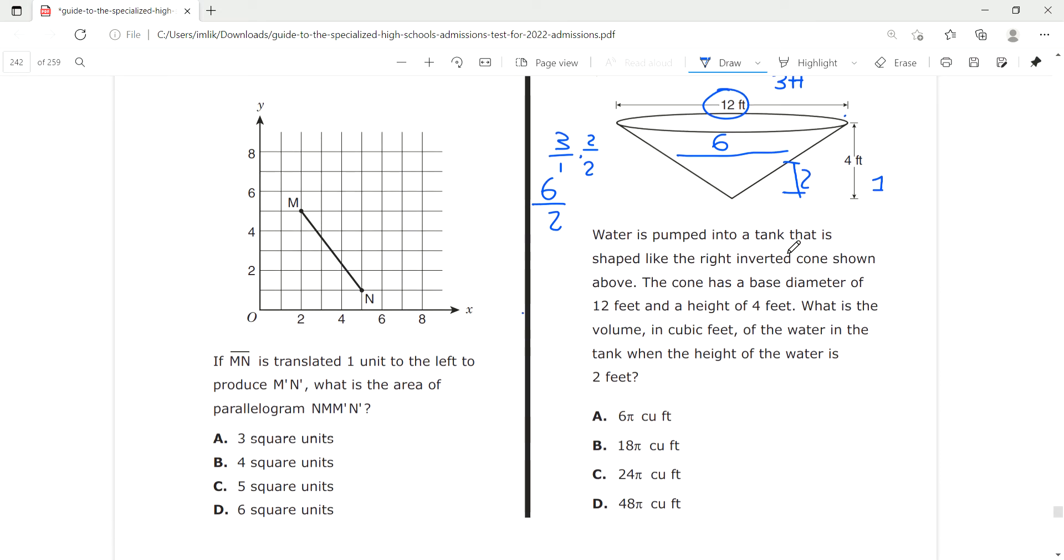V equals π times r, which is 3, 3 squared times h over 3, which is 2 over 3.